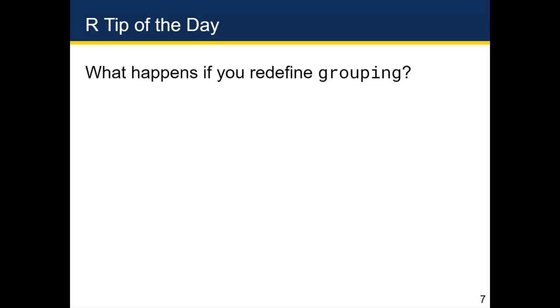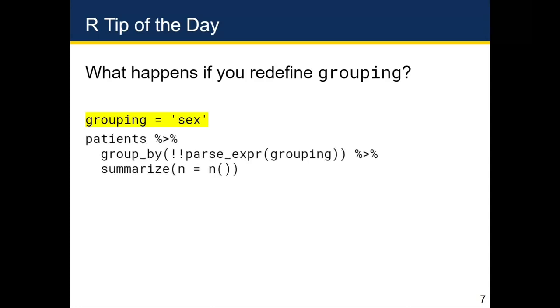So what were to happen if we were to redefine grouping? So for example, in the last example, we had assigned the value pay type to the grouping variable. What if I wanted to run that same code after reassigning grouping to have a value of sex in quotes? So this code would also work as intended because what's happening here is that when I say patients then group by parse expression grouping, that parse expression grouping is putting in the word sex in quotes in this space, then removing those quotes. And so it looks to R as if I had typed out patients then group by sex, then summarize N equals N. And if I had typed that out, this is the result I would get. So I still get the correct result when I redefine the grouping variable.